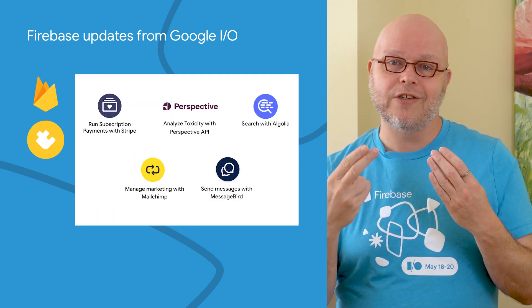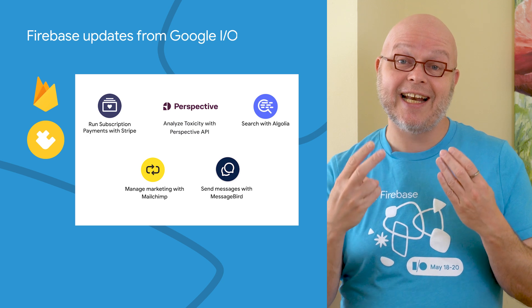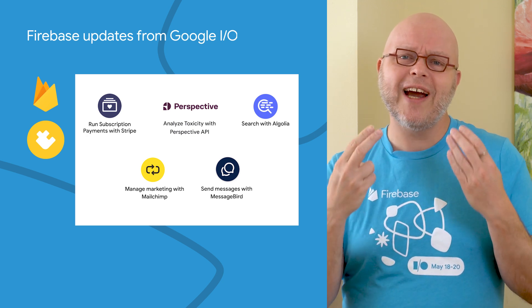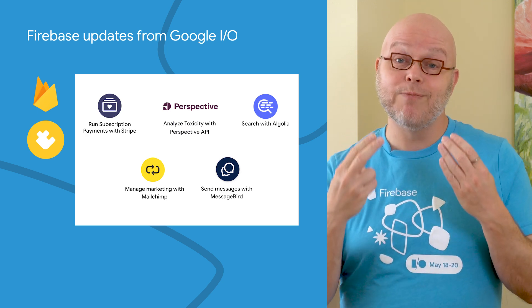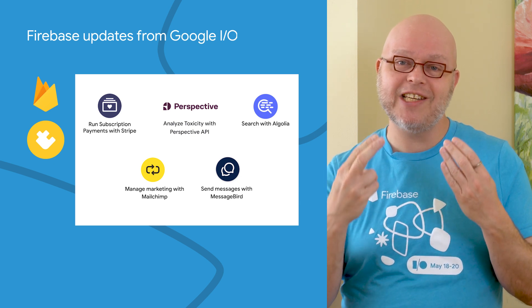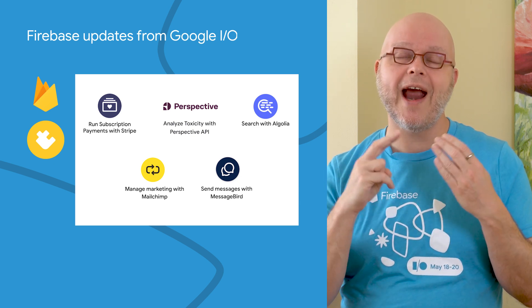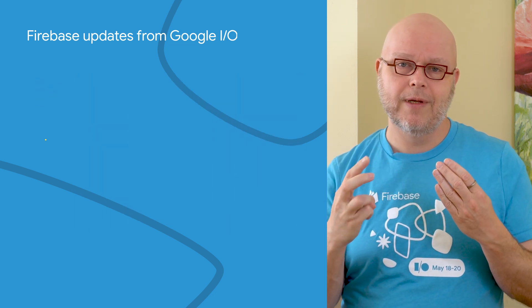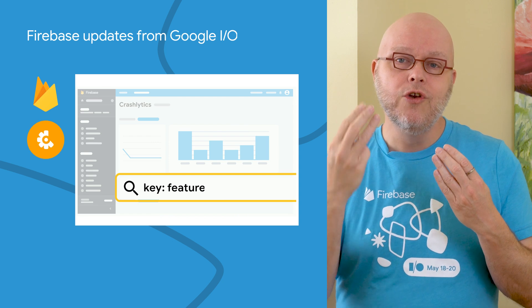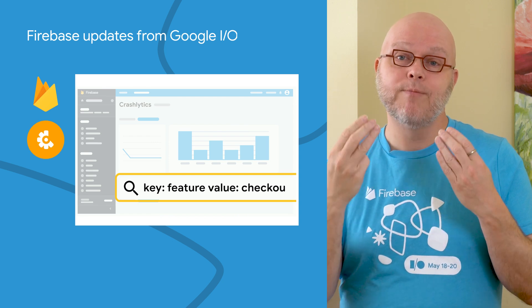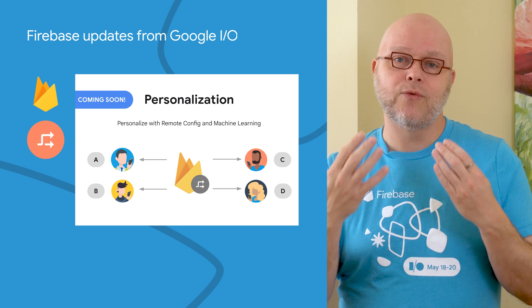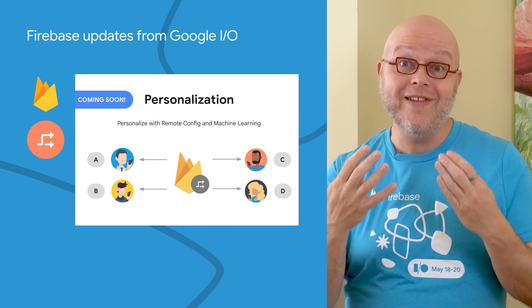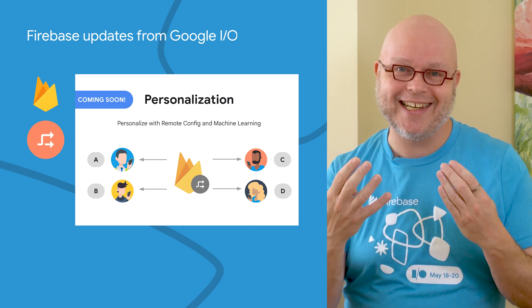We have new extensions to easily analyze sentiment and comments, to search Firestore content through Algolia, to manage marketing with MailChimp, and to send messages to your users wherever they are with MessageBird. There are new filters and improved game support for Crashlytics. And finally, there's an early access release of Remote Config that allows you to do on-device personalization.